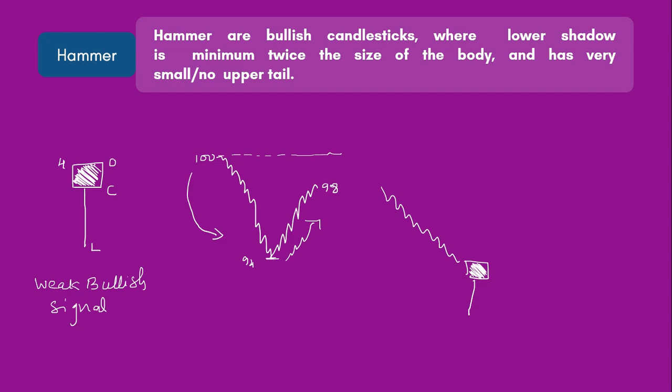A negative hammer is a weak bullish signal — bulls are trying to push upward but are comparatively weak. If the market is going down and you see a negative hammer, it signifies bulls are trying to come up but need confirmation. We wait for one more candle: if the next candle is positive and closes above the previous candle, that means bulls have overtaken the bears and we buy. If the next candle is also negative, we discard the signal and do not take any trade.